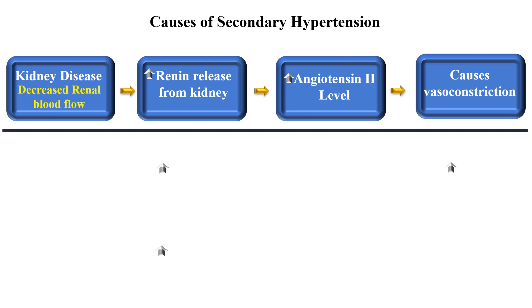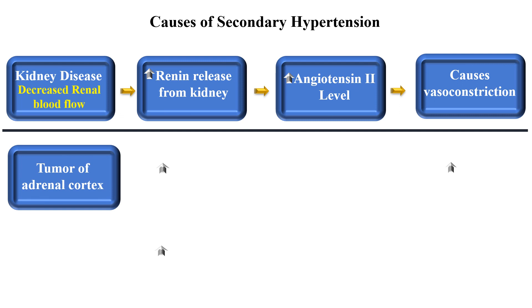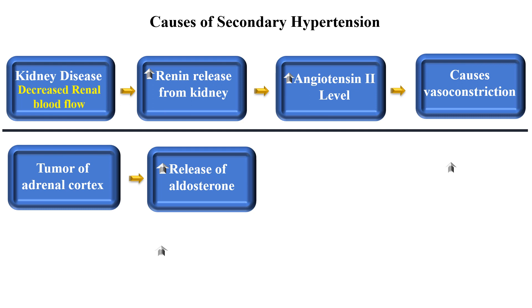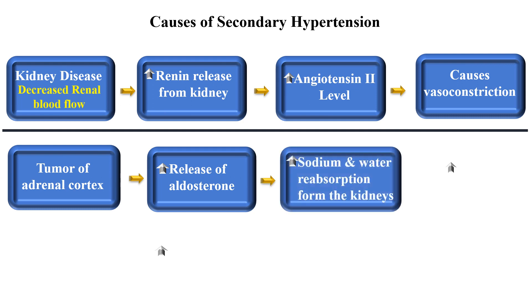Another cause involves the adrenal gland, located above the kidney. Adrenal glands are divided into two parts: the outermost part is the adrenal cortex and the innermost part is the adrenal medulla. The adrenal cortex secretes aldosterone, and the adrenal medulla secretes noradrenaline. Both aldosterone and noradrenaline regulate blood pressure. Whenever there is a tumor of the adrenal cortex, there is an abnormal increase in the release of aldosterone, and as a result sodium and water reabsorption is increased from the kidney.